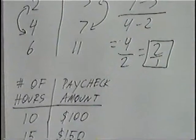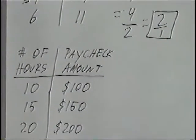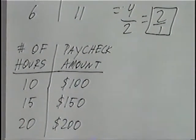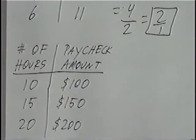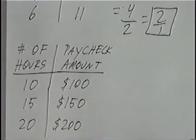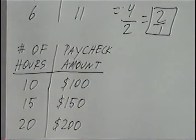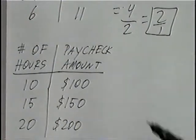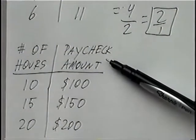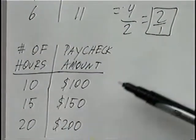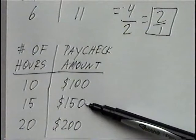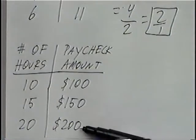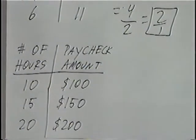The second and last question for this section uses another table. The left side is labeled number of hours — we have 10 hours, 15 hours, and 20 hours. The right side shows the paycheck amount: $100, $150, and $200.